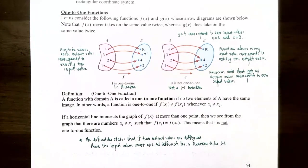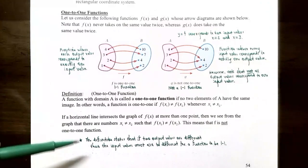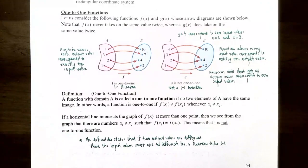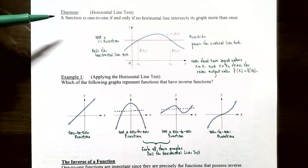You can think of this in terms of a graph as well. A horizontal line that intersects the graph of f(x) at more than one point means there are x₁ and x₂ — different input values — mapping to the same y value. The y values must be different to be a one-to-one function. If a horizontal line crosses the graph at more than one point, it's not a one-to-one function. This idea of using a horizontal line is called the horizontal line test.